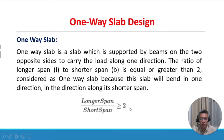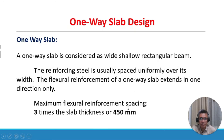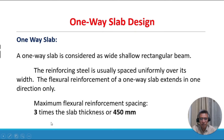A one-way slab is considered as a wide, shallow rectangular beam. The reinforcing steel is usually spaced uniformly over its width. The flexural reinforcement of a one-way slab extends in one direction only. Maximum flexural reinforcement spacing equals three times the slab thickness or 450 millimeters — that is the maximum spacing of the reinforcement bar.